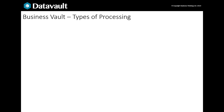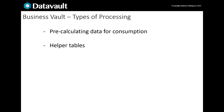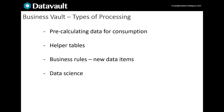What types of data can the Business Vault hold? We might need to pre-calculate data for efficiency reasons so it can be consumed by a downstream dashboard. We might need to calculate helper tables that drive better performance. We might calculate new values such as ratios. We might be using the results of data science for our business. And finally, we might be checking data quality and want to calculate quality measures.